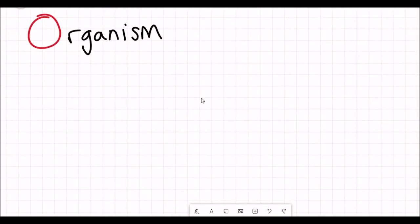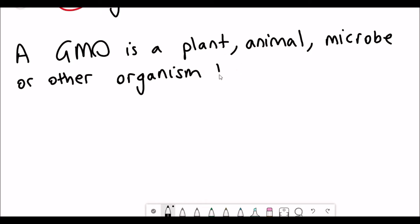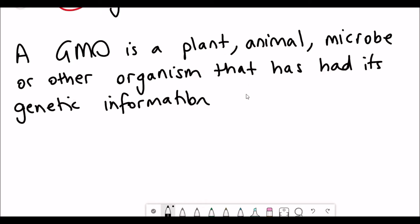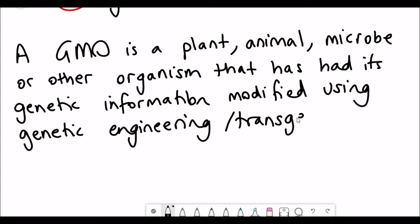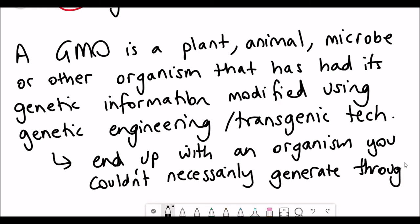But what actually are GMOs? Well, they're genetically modified organisms. To give a better definition, a genetically modified organism is an organism, so a plant, animal, or microbe, that has had its genetic information modified. The way that that's modified is using genetic engineering approaches or transgenic techniques. You end up with an organism that you couldn't necessarily get just through selective breeding.